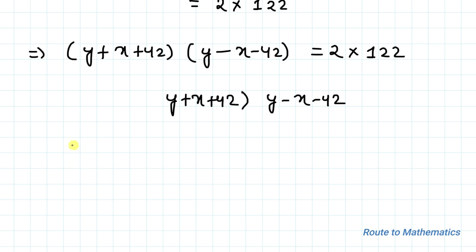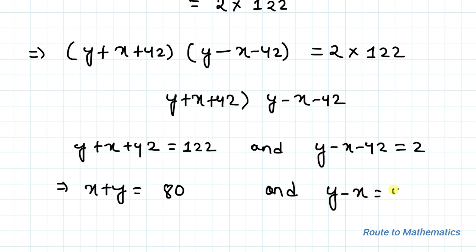From assumption we can write y plus x plus 42 equals 122 and y minus x minus 42 equals 2. From here we can write x plus y equals 80 and y minus x equals 44.